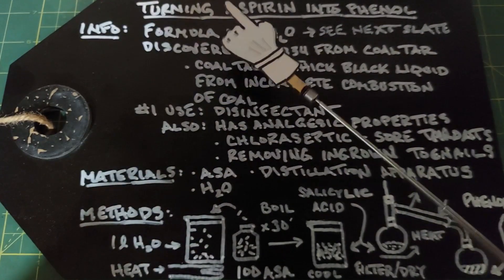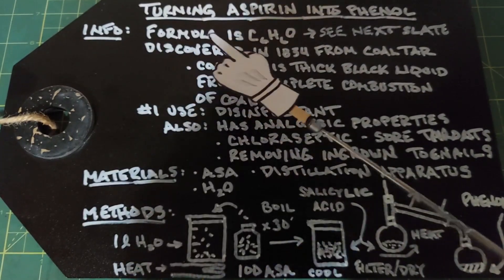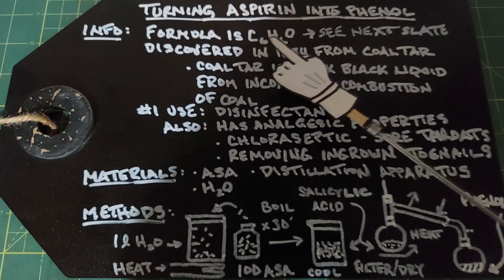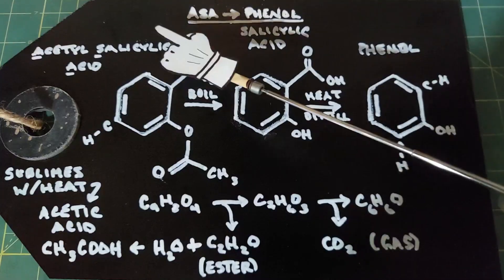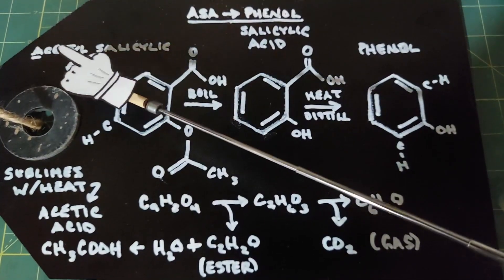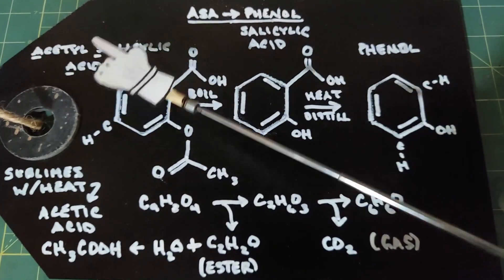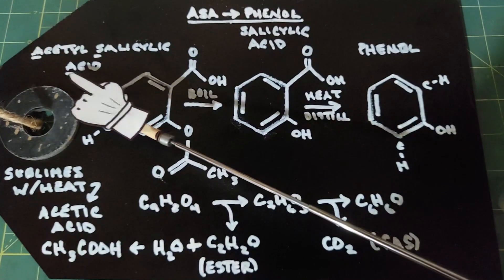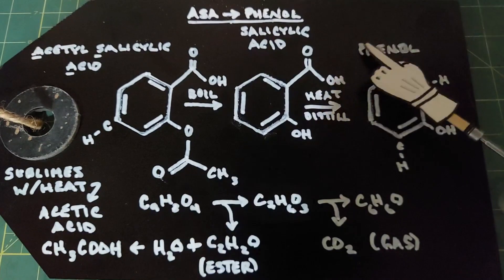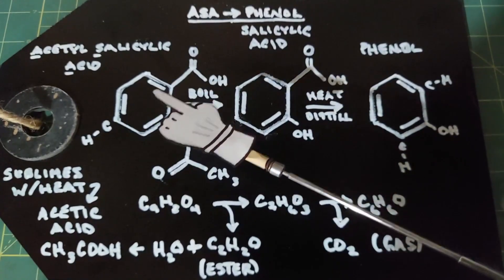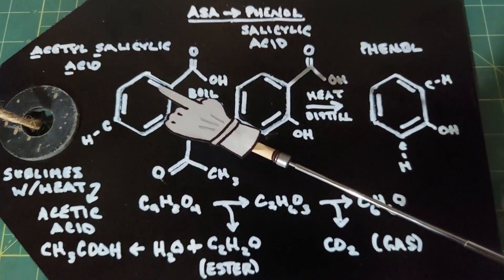This video is about taking regular aspirin and turning it into phenol. The formula of phenol is C6H6O. Aspirin is known as acetylsalicylic acid, sometimes shortened as ASA. We're going to form salicylic acid next, and finally we're going to form the phenol. These are 2D representations of each of the chemicals formed at each step.